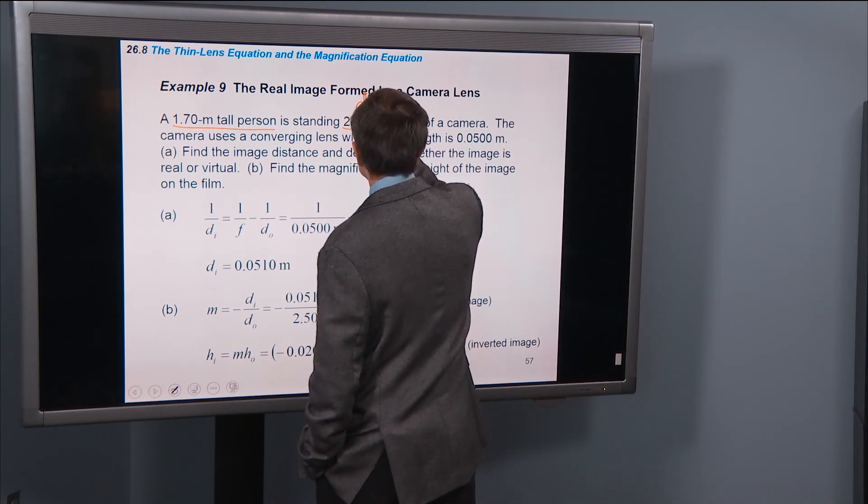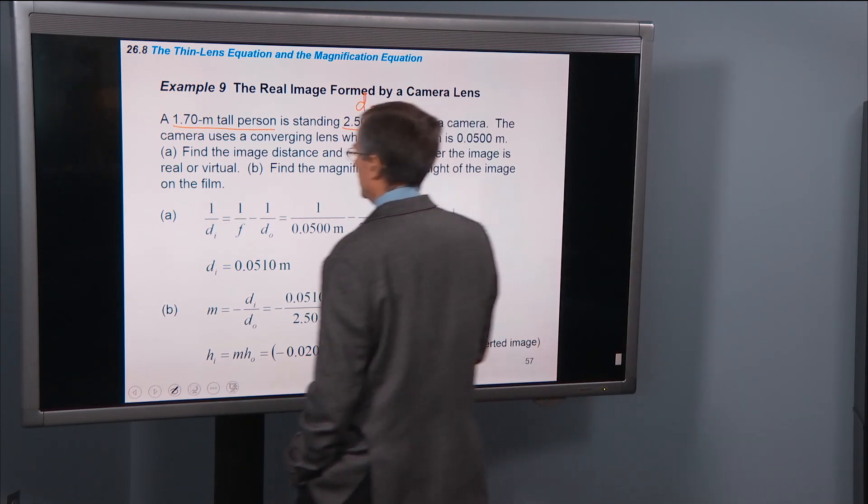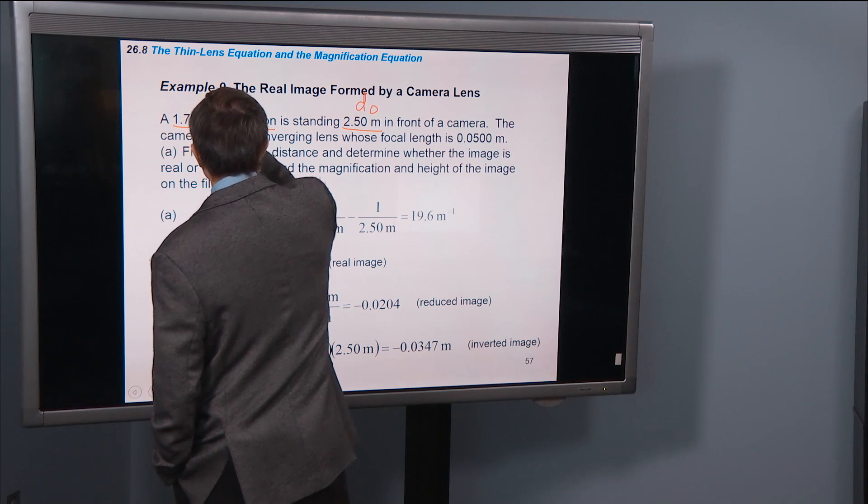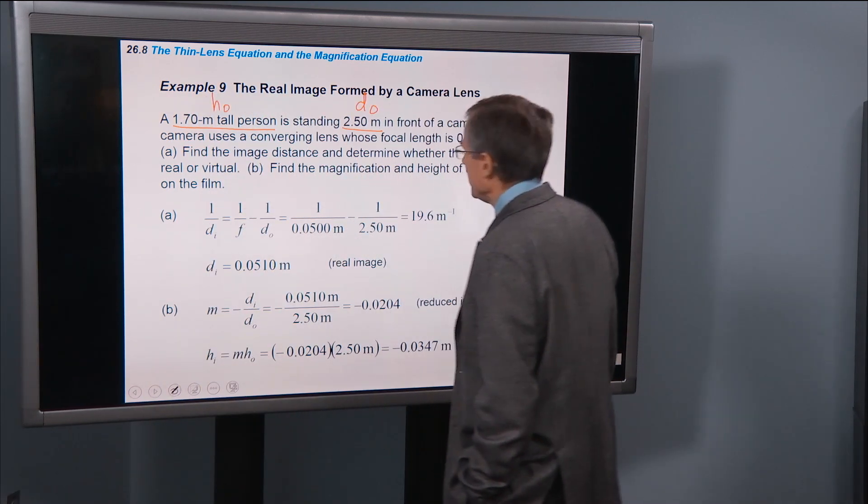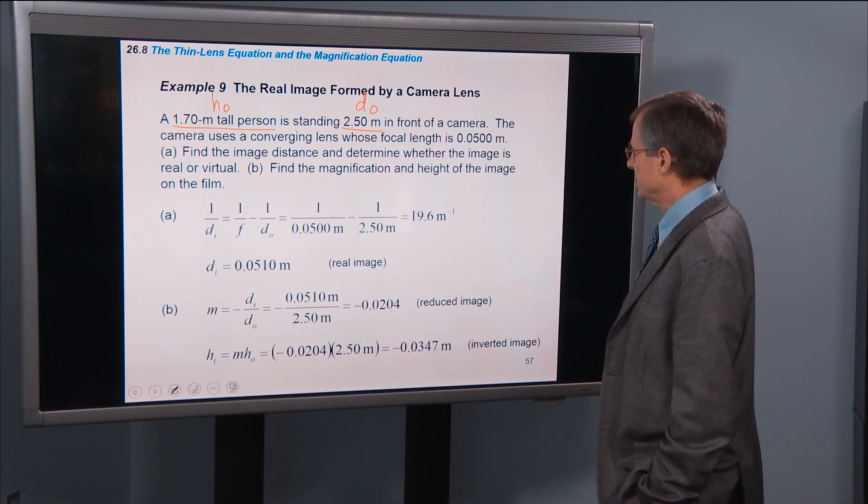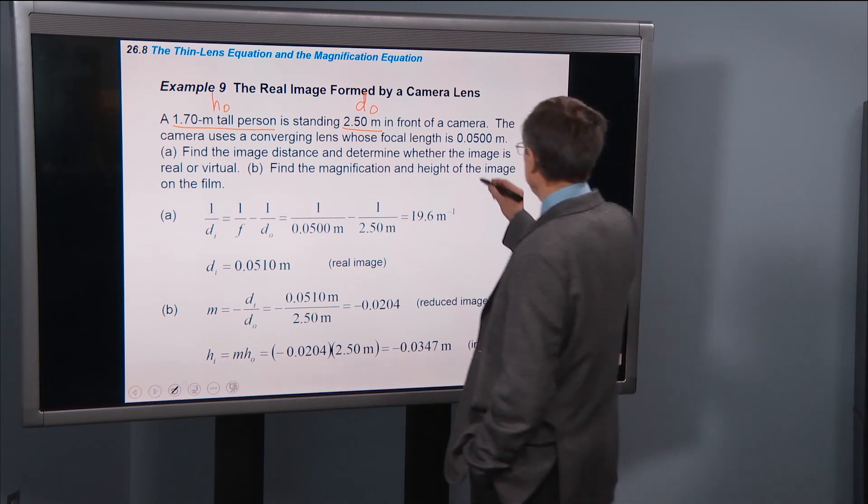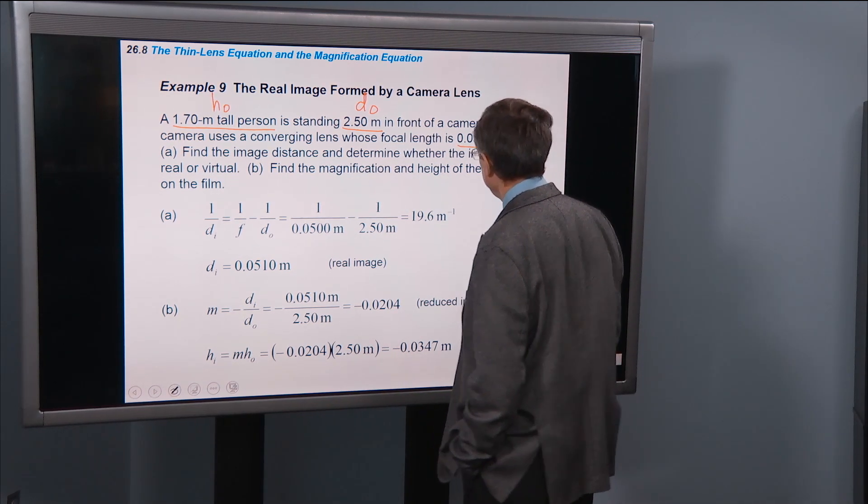D0. This is our object height, H0. The camera uses a converging lens whose focal length is 0.05 meters, that's the focal length, F.